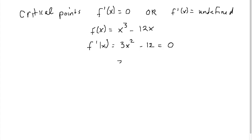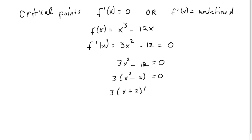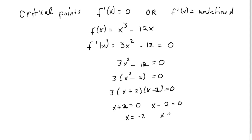So now we'll solve: 3x squared minus 12 equals 0. Let's start by factoring out a 3 — x squared minus 4 equals 0. This factors to x plus 2 times x minus 2 equals 0. Solving these individual factors, we get x plus 2 equals 0 and x minus 2 equals 0, giving us x equals negative 2 and x equals 2.